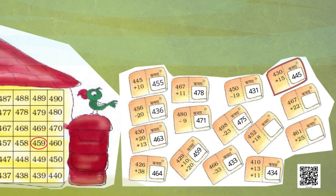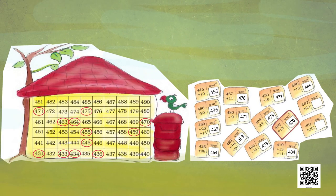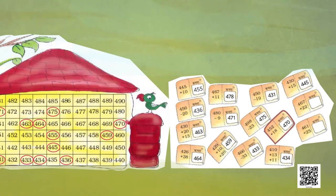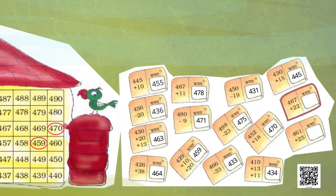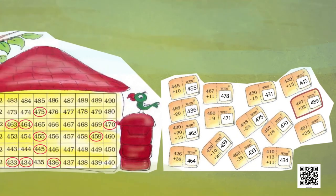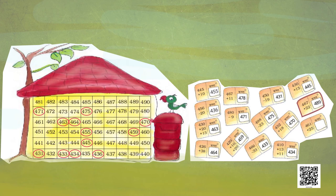Room number: 452 plus 18. What's the room number? Correct — 470. Let us deliver it. Next: 467 plus 22. Correct — 489. Well done! Let us deliver it to room number 489.